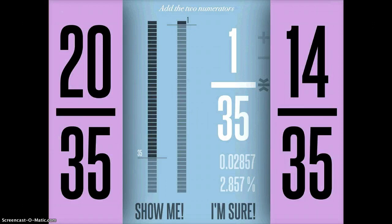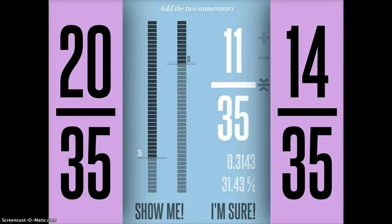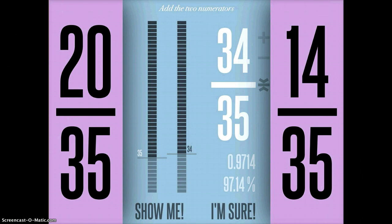So you tap found it and then it takes you to the next step, which is add the two numerators. So this is where I'm going to add my 20 plus my 14 to make 34. So I bring it down to 34, I tap I'm sure, and it says correct.